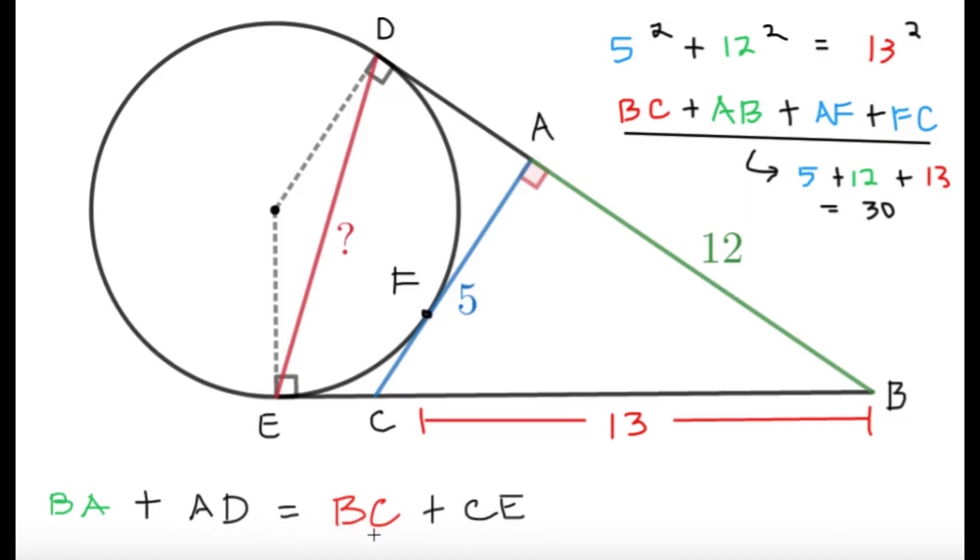Now we know what BA and BC are, but we can make a nice observation here. Point A is technically a point outside the circle and AD and AF are tangents to the same circle. With this, I can say that AD would have the same length as AF. Same thing, same can be said for point C. Point C is outside the circle and CE and CF are both tangents to the circle. So CE, I can technically write as CF.